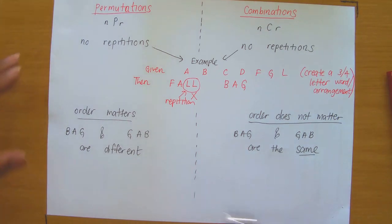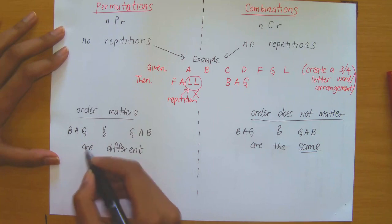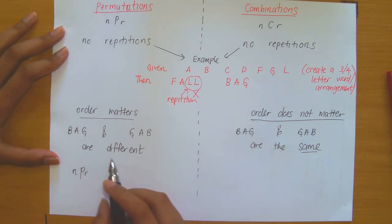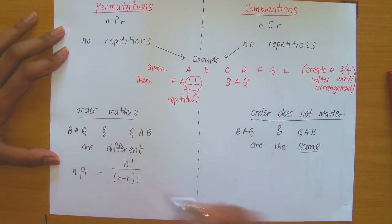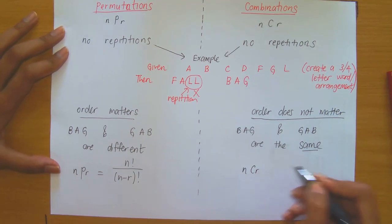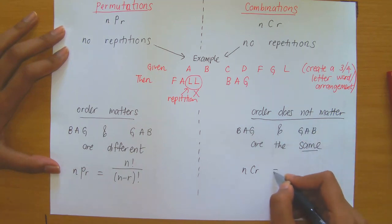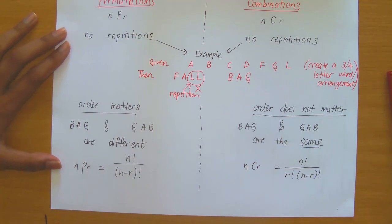You need to know the distinction between order matters and order does not matter. NPR — choosing R objects from N where order matters — is equal to N factorial divided by (N minus R) factorial. And N choose R — combinations, where order does not matter — is equal to N factorial divided by R factorial times (N minus R) factorial.